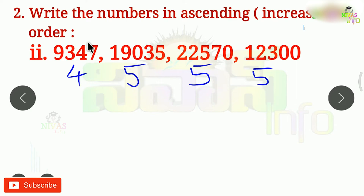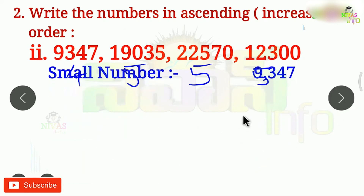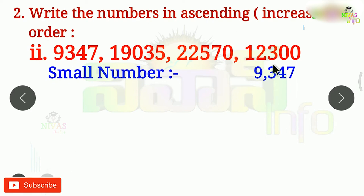So, the 4-digit number is 1. What is the smallest number? This first number is 9,375. What is the smallest number? This number is 1 — this is the smallest number.